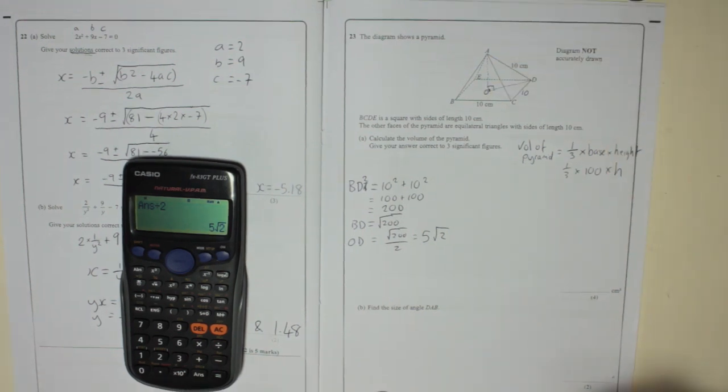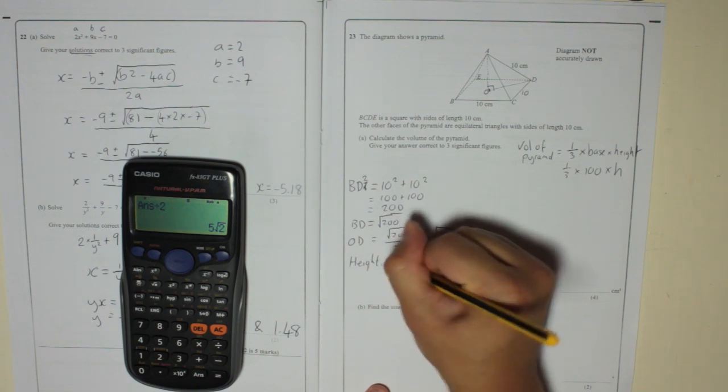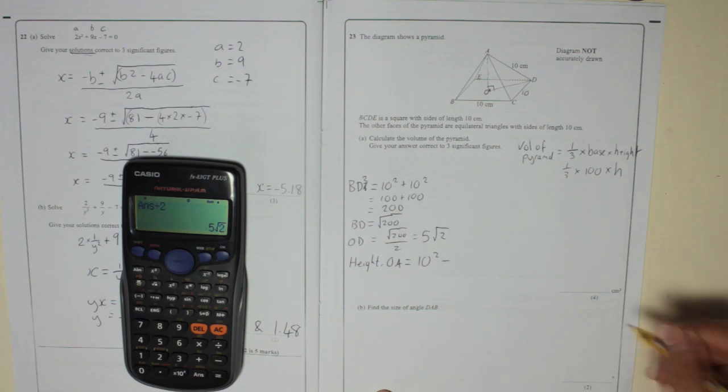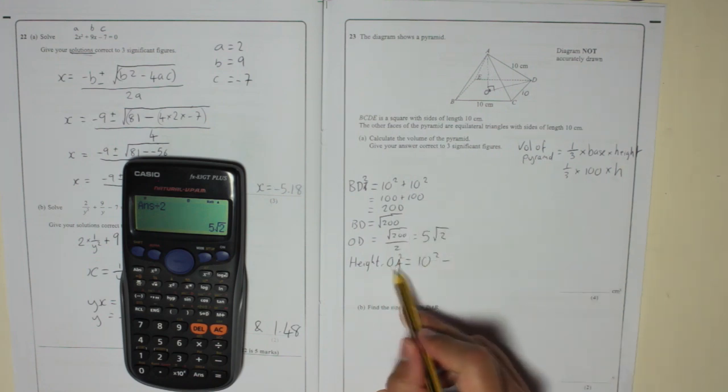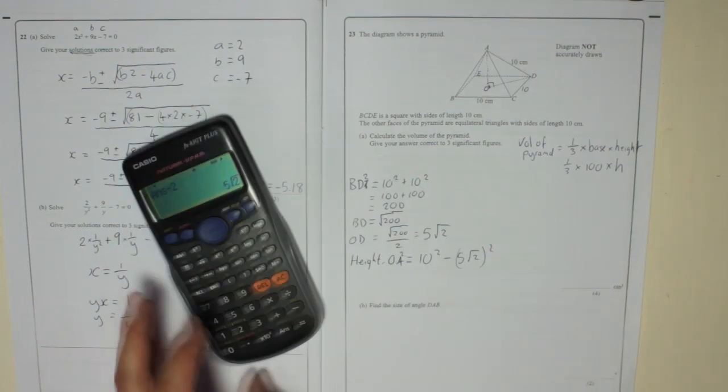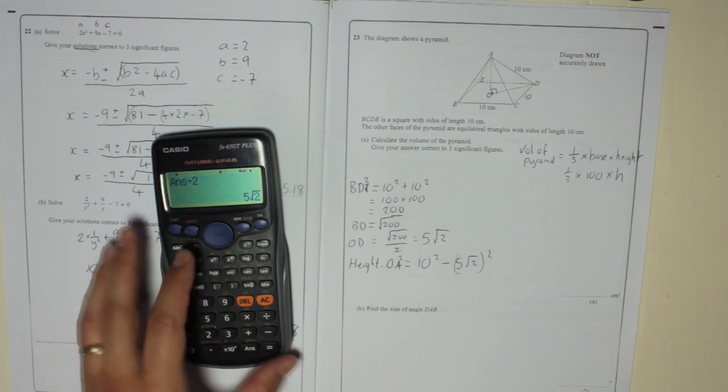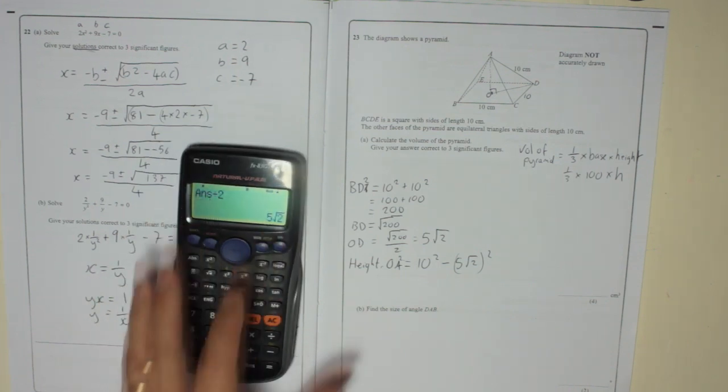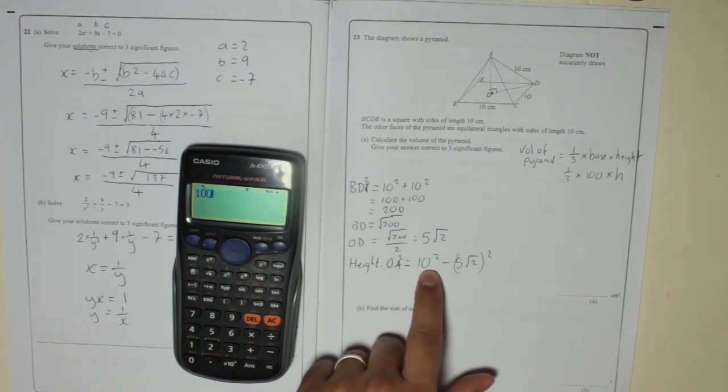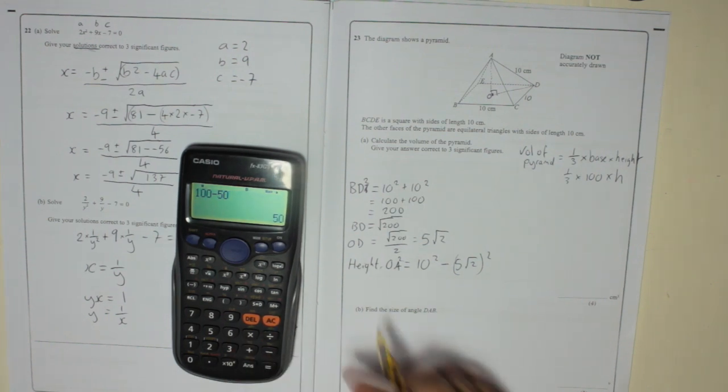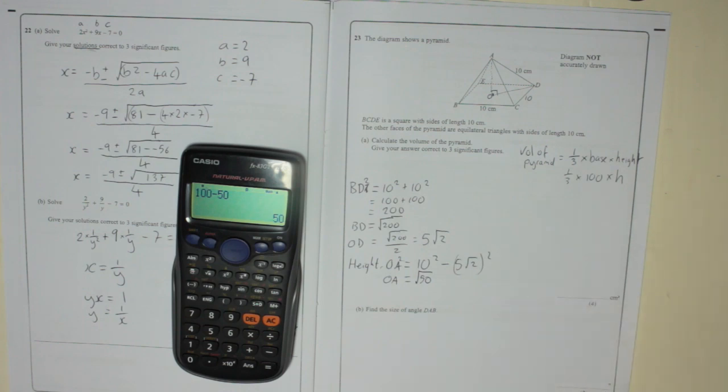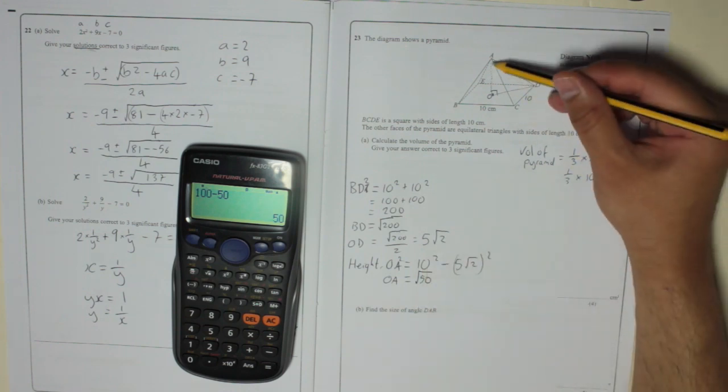Now we can work out the height. So the height, OA, that's the height, remember. OA squared, remember, because it's Pythagoras, OA squared is equal to 10 squared take away 5 root 2 squared. I'm just going to square my answer in my calculator, because that's 5 root 2. You get 50. So it means 10 squared, take away 50. So 100, 10 squared, take away 50 is 50. So OA squared equals 50. So OA is the square root of 50. That's the height, square root of 50.